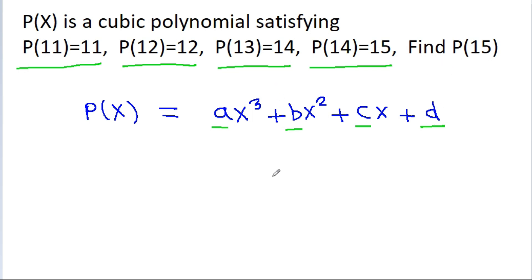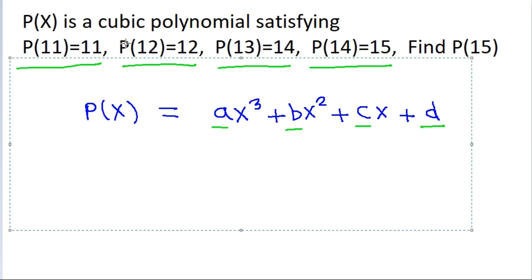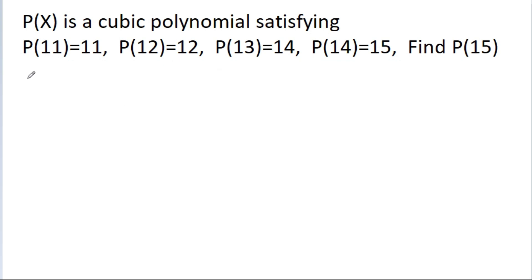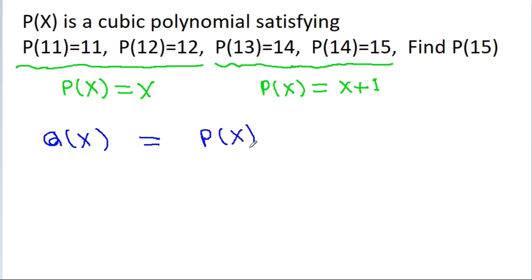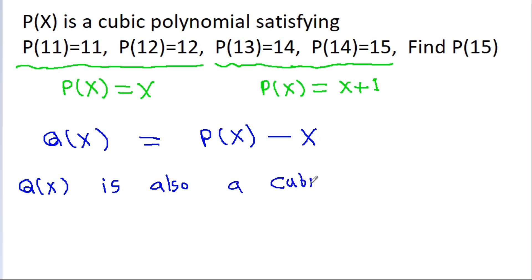But this method will be very time consuming. Here we can see p(11)=11 and p(12)=12, so this is like p(x) = x. And p(13)=14 and p(14)=15, so this is like p(x) = x + 1. So if we take q(x) = p(x) - x, then since p(x) is a cubic polynomial and x is linear, q(x) is also a cubic polynomial.